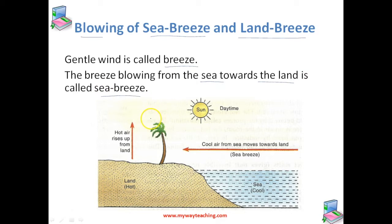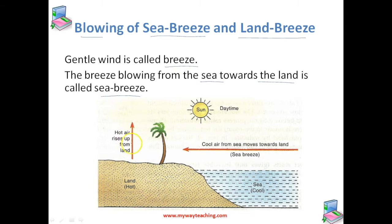How it happens: in the daytime when the sun shines, the solid land gets heated to a higher temperature much more quickly than the liquid sea water. And the hot air over the land rises upwards, and cooler air from over the sea moves towards the land in the form of cool breeze.